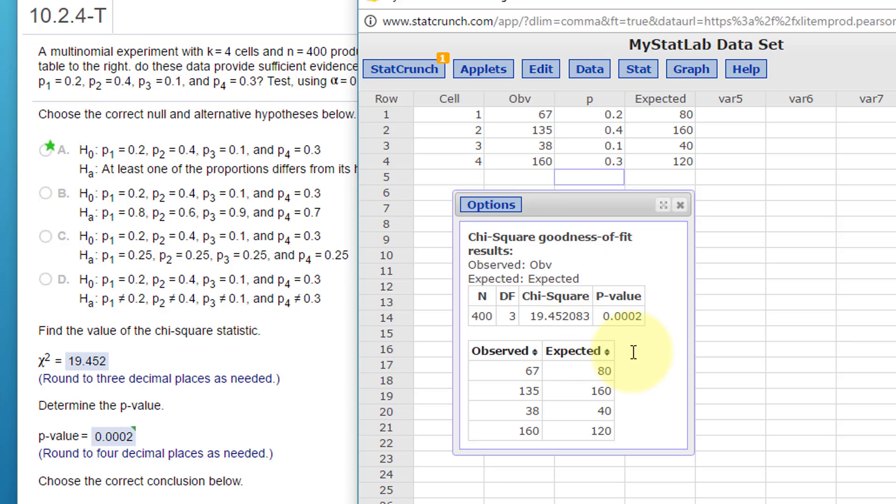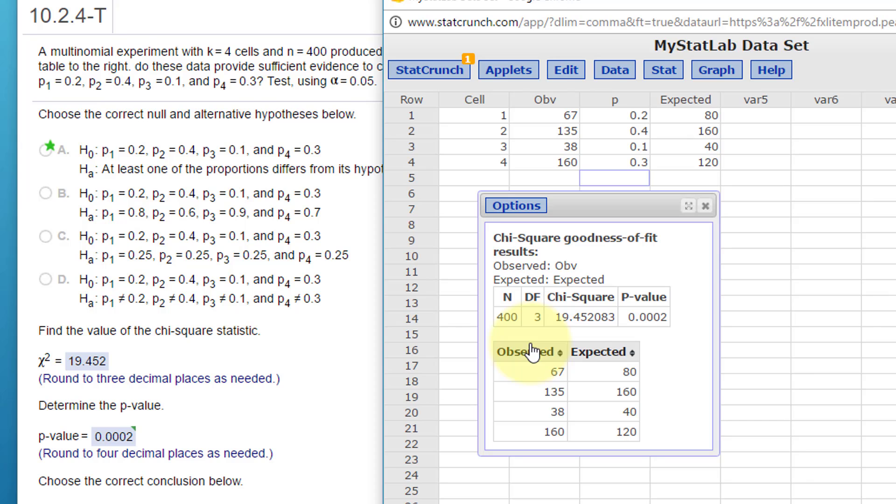We get a chi-square test statistic of 19.452 and a p-value of 0.002, which is what they're asking there. 19.452. The fact that the p-value is less than alpha of 0.05 tells us to reject the null.